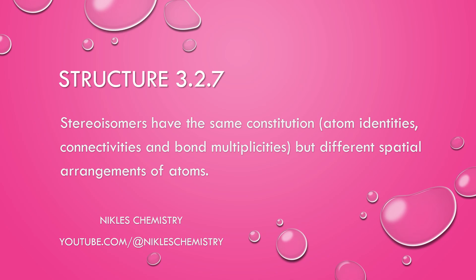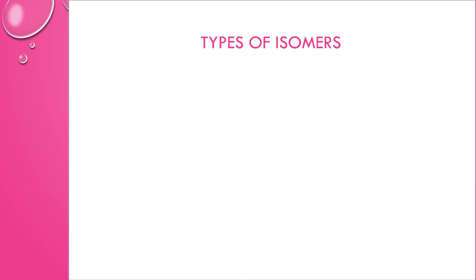Today we're going to talk about Structure 3.2.7. This is a higher level topic. It's all about stereoisomers, which have different spatial arrangements of atoms. There are two major types of isomers: structural isomers, which we talked about in section 6, and today we're going to talk about stereoisomers.